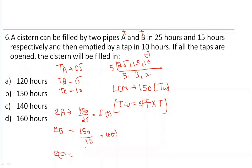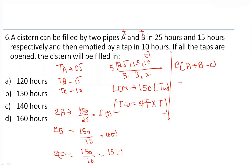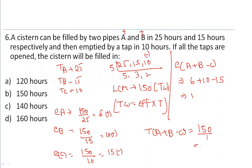Efficiency of C is 150 divided by 10, which equals 15 — but this is negative work because C is used to empty the tank. If all pipes work together: A gives +6, B gives +10, and C gives -15. So the combined efficiency is 6 plus 10 minus 15, which equals just 1 unit of water per hour.